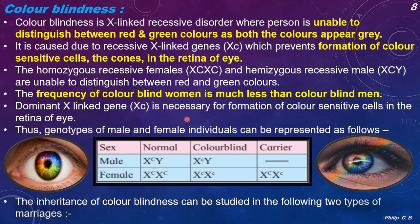The dominant X-linked gene is necessary for formation of color-sensitive cells in the retina. The genotypes can be represented as: normal male X^C Y, color-blind male X^c Y; normal female X^C X^C, carrier female X^C X^c, and color-blind female X^c X^c. The inheritance of color blindness can be studied with the following two types of marriages.